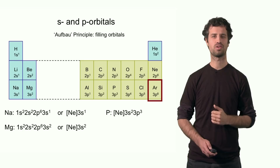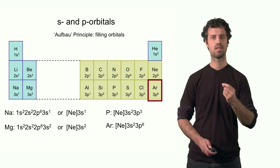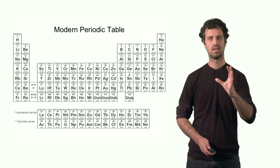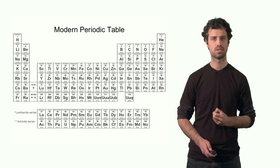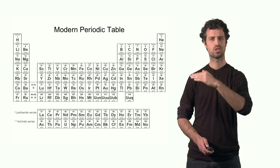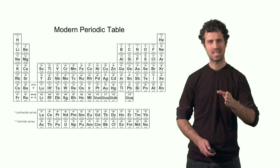The first three rows — n = 1, n = 2, and n = 3 — of the periodic table can be fully reconstructed based on the quantum numbers of the orbitals. The combination of valid quantum numbers and the rule that only two electrons can occupy an orbital gives rise to the structure of the periodic table. Electron configuration is also key to understanding the chemical properties of the elements.